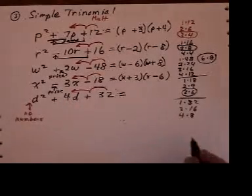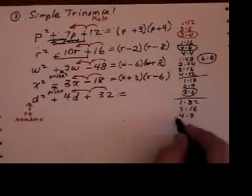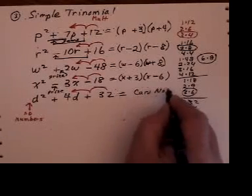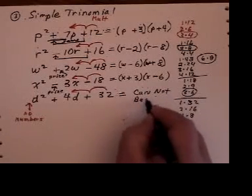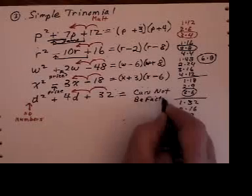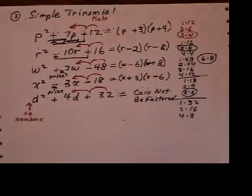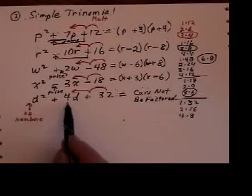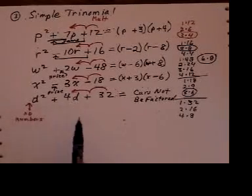None of these guys add to make 4. So therefore, you can say, cannot be factored. So if the combinations do not do that to make that, you write out cannot be factored.